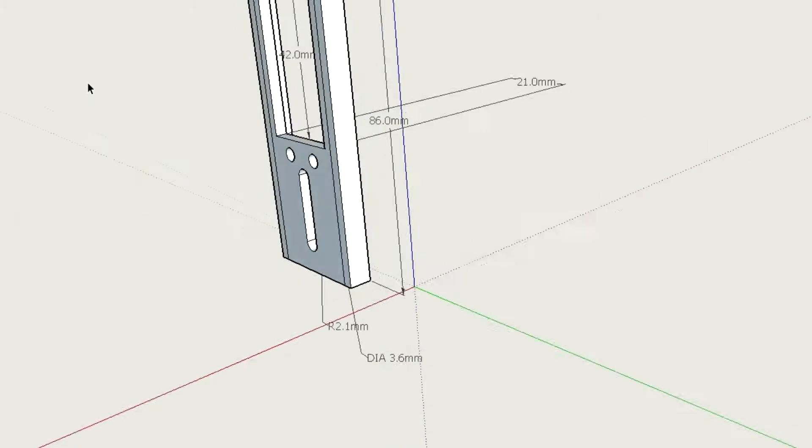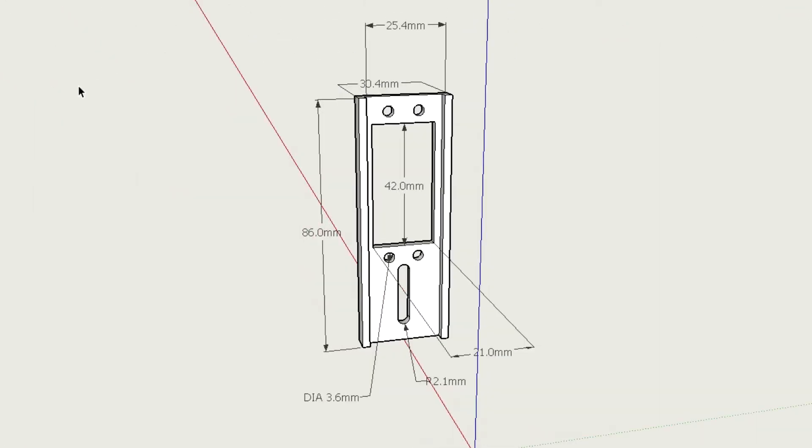The servo mount is designed to accommodate a servo used to trigger the camera shutter release. With this design you can use nearly any camera on the head. The servo mount has a slot that allows adjusting the vertical height of the servo to match the shutter release on the camera.